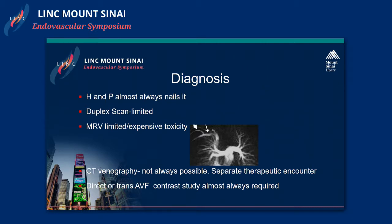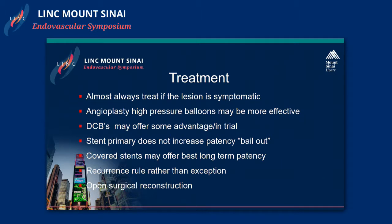MRV is available but expensive, and in the renal failure population, difficult to use because gadolinium can be obviously toxic. But it can give some valuable information in certain cases. CT venography is very useful but not always possible. Additionally, if the patient needs an intervention, there's going to be a separate therapeutic encounter. So direct or trans-AV fistula contrast study is almost always required in order to get to the bottom of the problem.